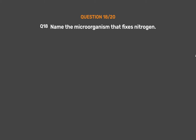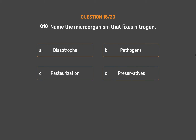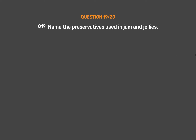Question number 18. Name the microorganism that fixes nitrogen. Option A: Diazotrophs. Option B: Pathogens. Option C: Pasteurization. Option D: Preservatives. The correct answer is Option A, Diazotrophs. Diazotrophs is the microorganism that fixes nitrogen.